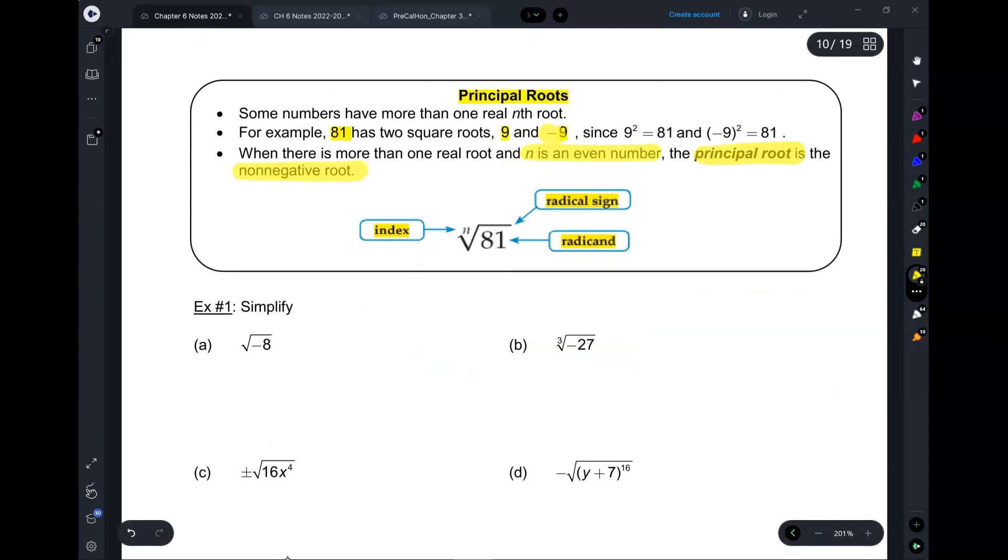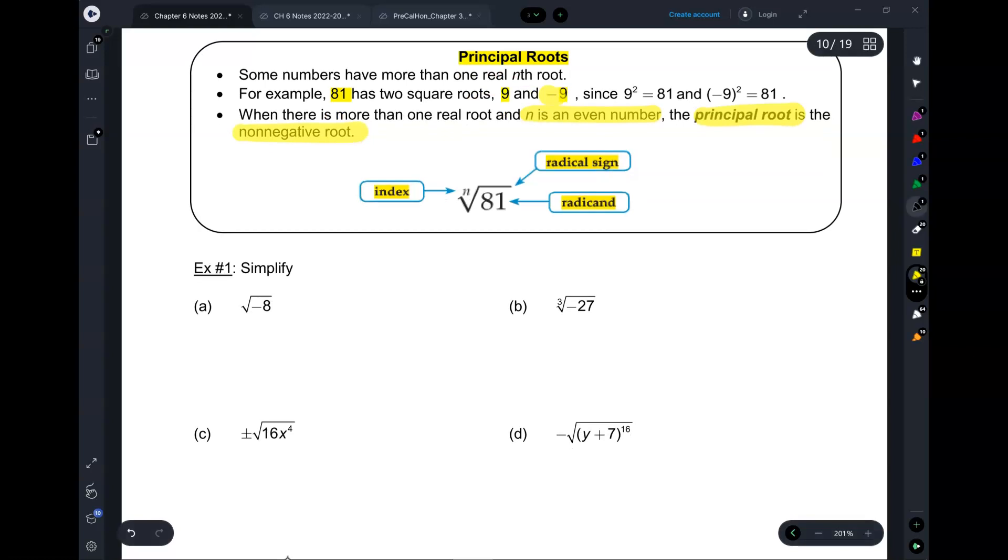So, some terminology here. This number over here is the index, n for index. That is the radical sign, and the stuff that goes inside is the radicand, which we actually came across last time when we were graphing them.